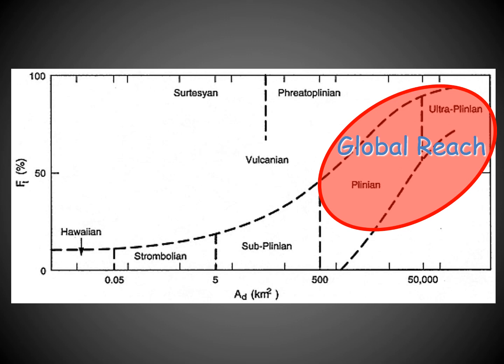There are a couple of oddballs that don't fit neatly. Surtseyan erupts through a water column, so the material doesn't go very far, but it's very energetic and the ash gets pulverized into sand — so it's almost all a millimeter or less but doesn't cover a wide area. Basically, you can go to an old deposit, pick up some ash, do some measurements, and have a pretty good idea of how that eruption behaved in the past.